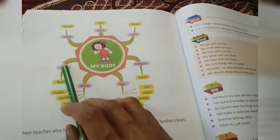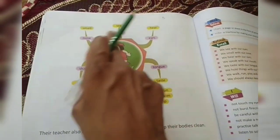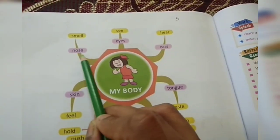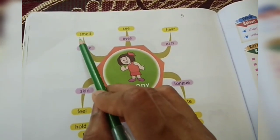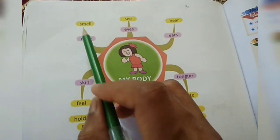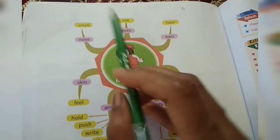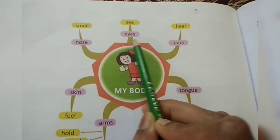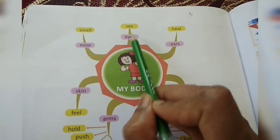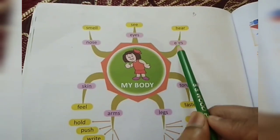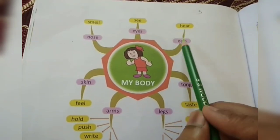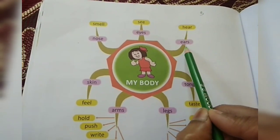Now let's discuss the function of different body parts. First, N-O-S-E, nose — we can smell with our nose. That is the function of the nose. Second, E-Y-E-S, eyes — we can see with our eyes. Then, E-A-R-S, ears — we can hear with our ears.